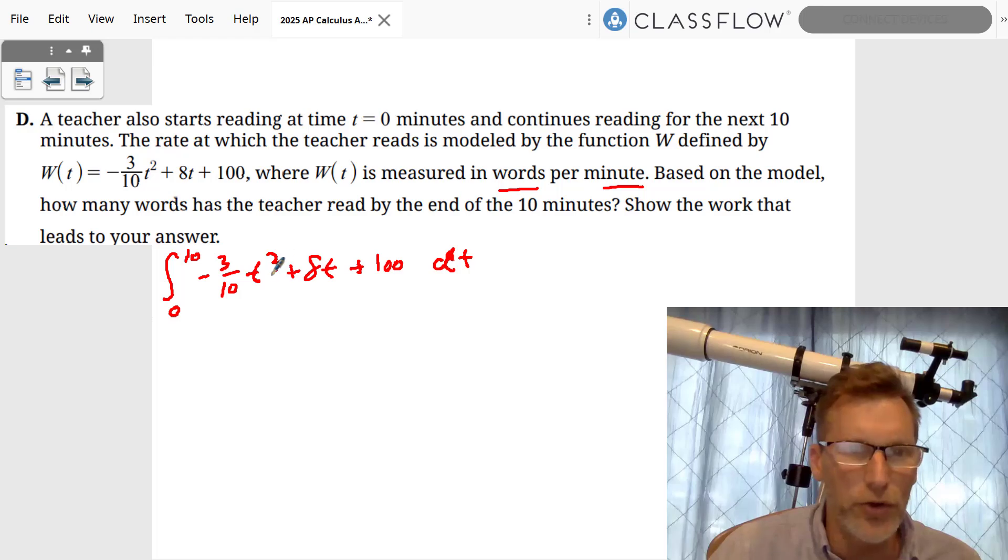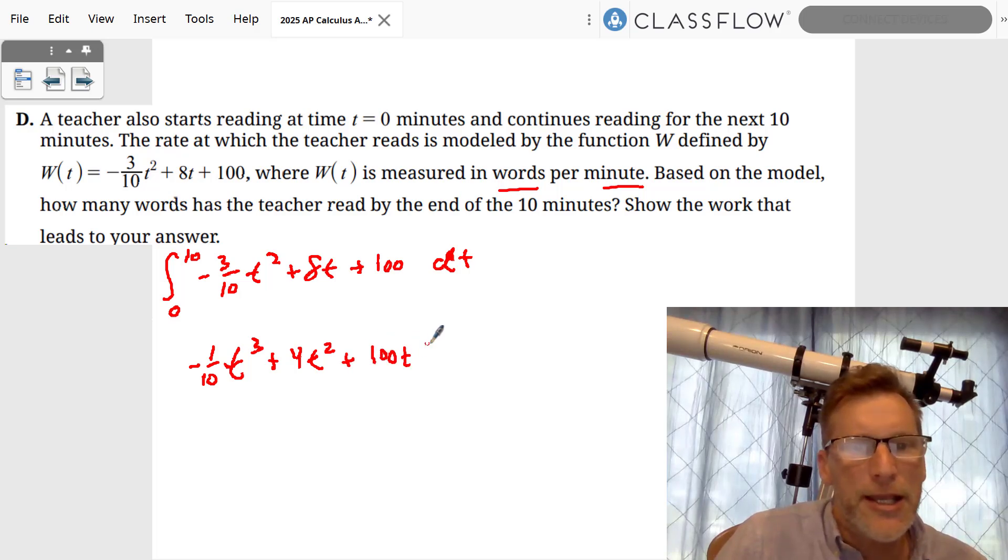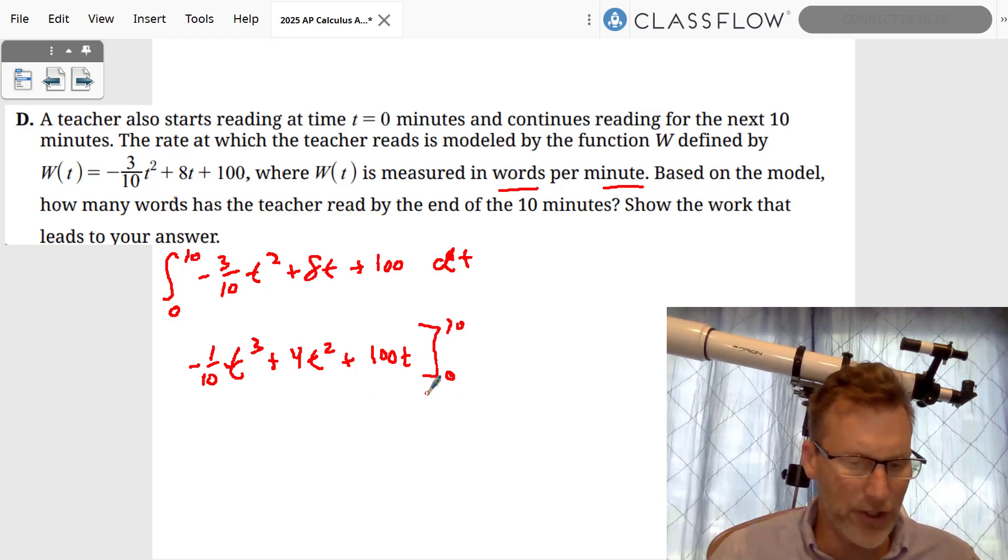So let's do an integral. This t goes from squared up to cubed, so it's t cubed. We're going to divide by 3—that cancels out with this 3, so we're left with 1/10 t cubed. Plus, this t goes up to t squared, we divide by 2, so that's 4t squared plus 100t. And we're going to evaluate that from 10 to 0. The nice thing about the 0 is everything's going to cancel out—it's 0. So we're going to use the 10. 10 cubed is 1,000, divided by 10 is 100, so that's negative 100.